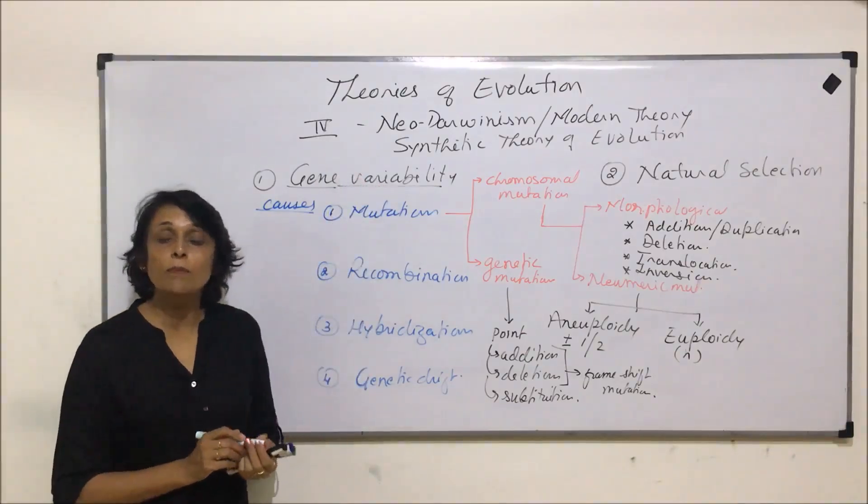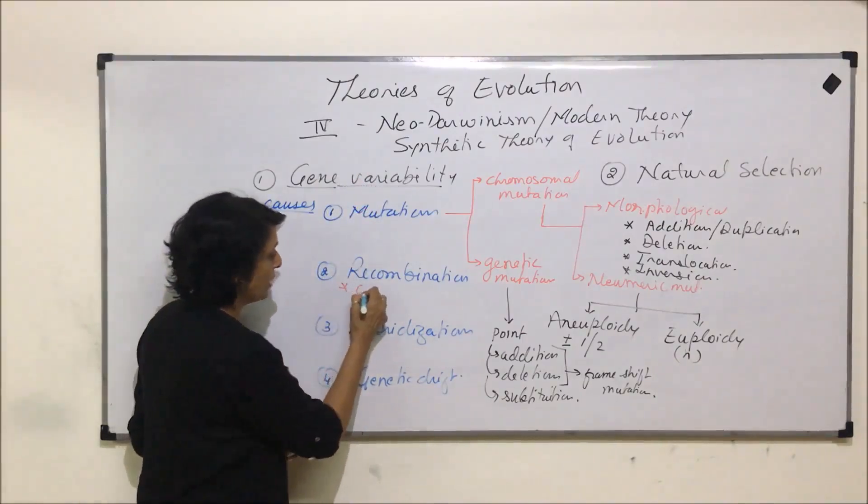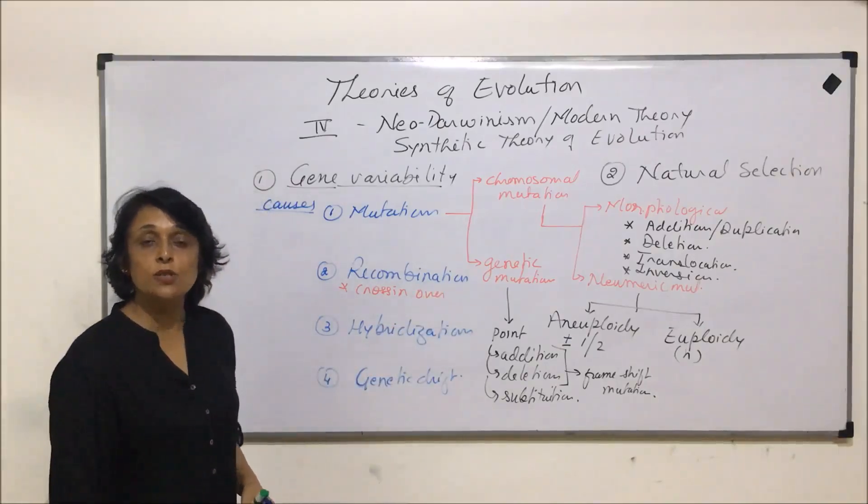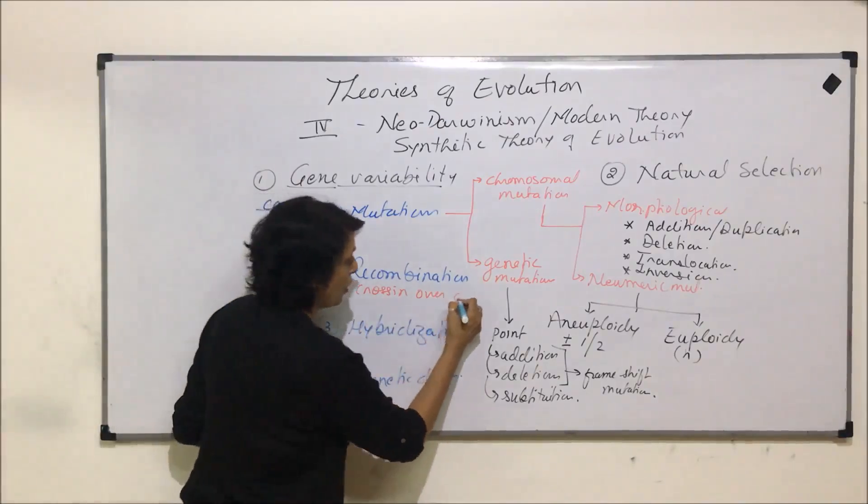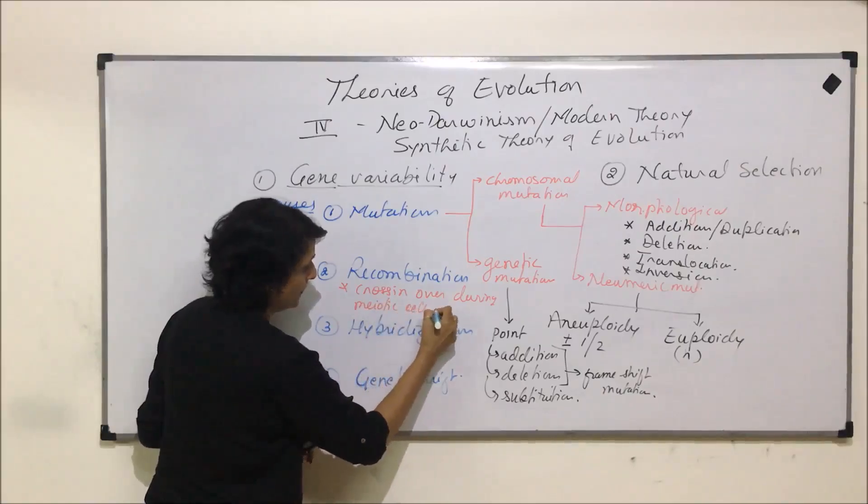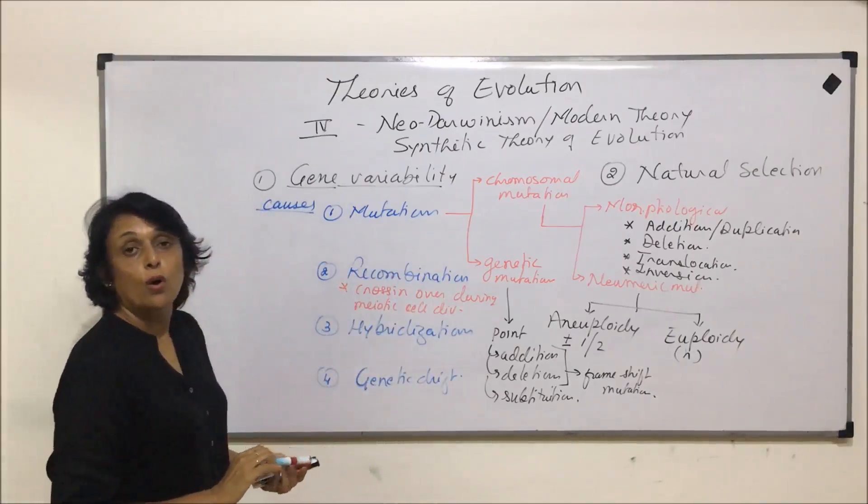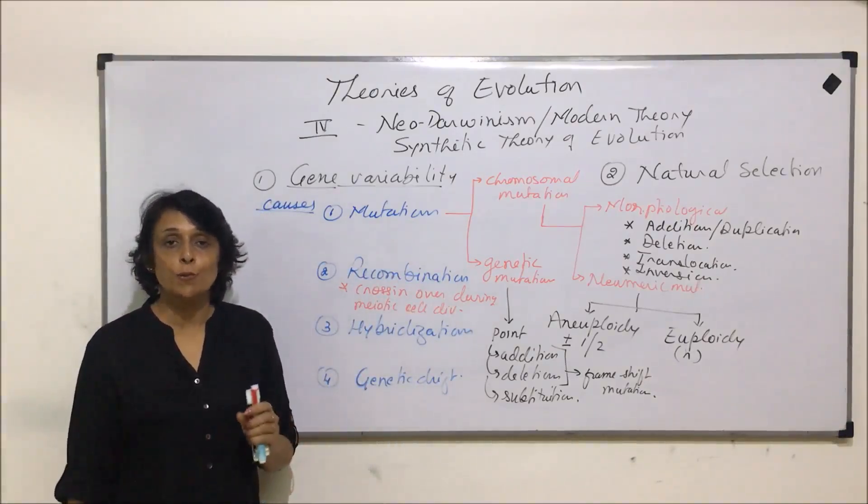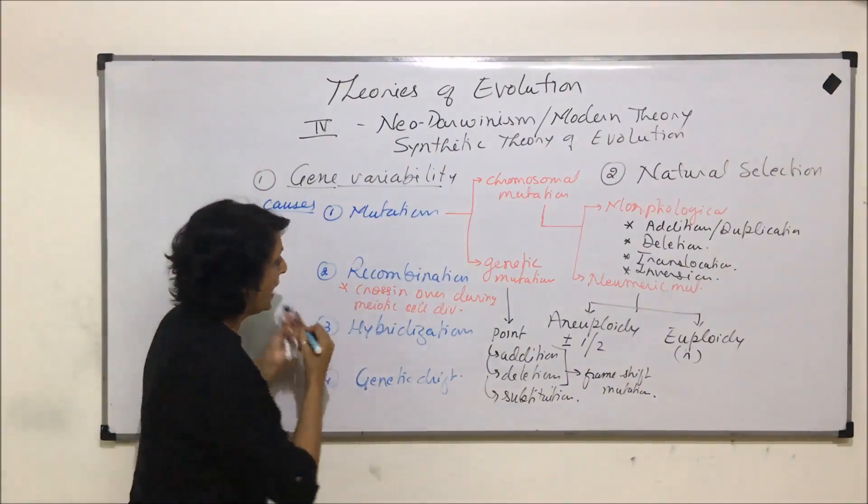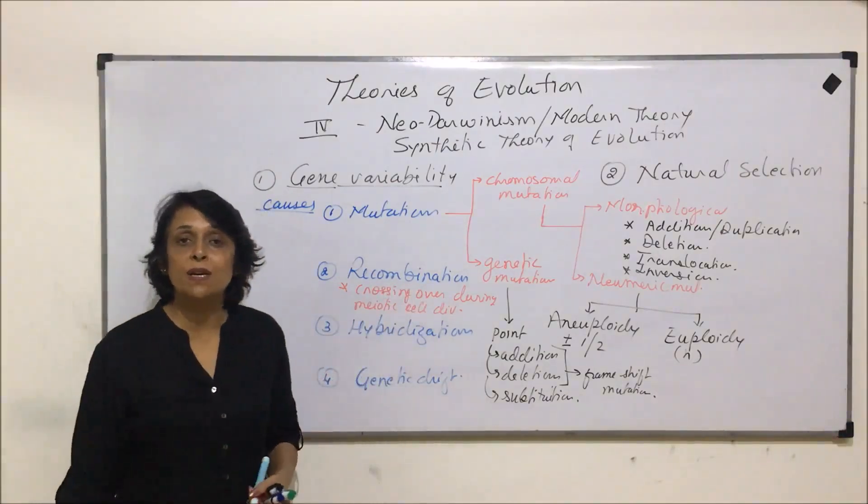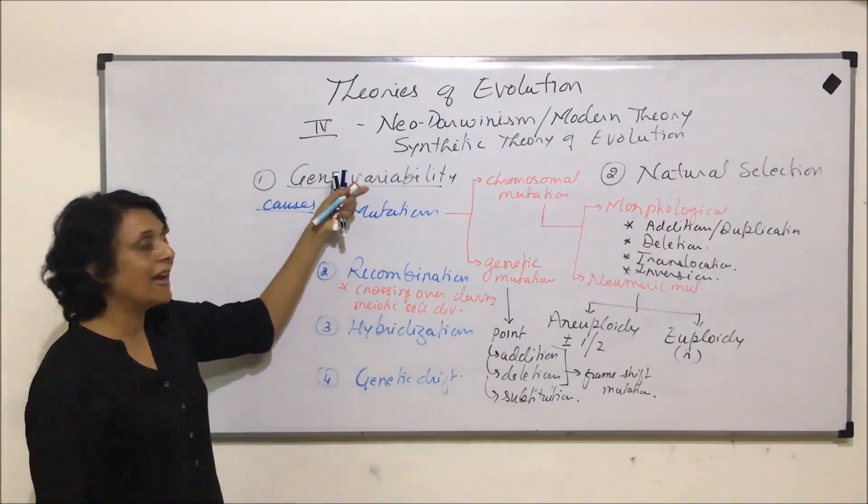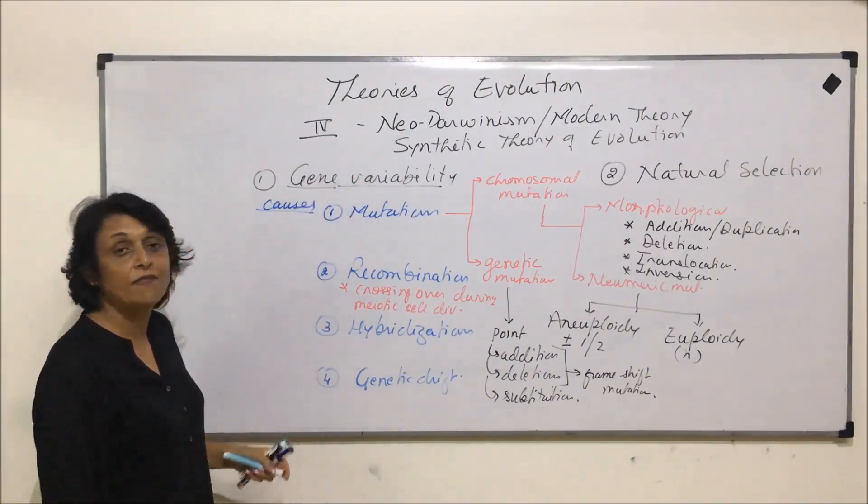The second cause is recombination, and this takes place during crossing over while gametes are formed, that means during meiotic cell division. The two homologous chromosomes undergo vertical splitting forming sister chromatids. The non-sister chromatids cross over and the genetic material gets exchanged. And that exchanged genetic material is known as recombination, and that also is responsible for this gene variability.